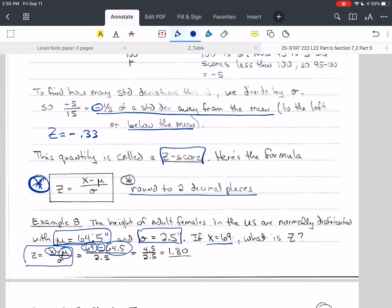And then we divide by sigma, which is 2.5. So when we do this subtraction, we get 4.5 divided by 2.5, and that turns out to be 1.80. So that is our answer.